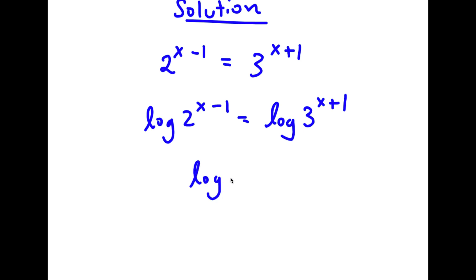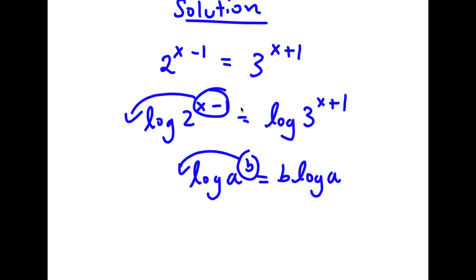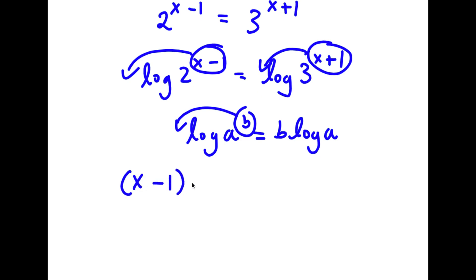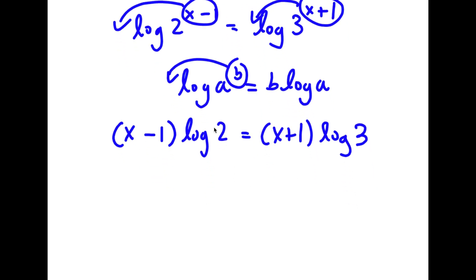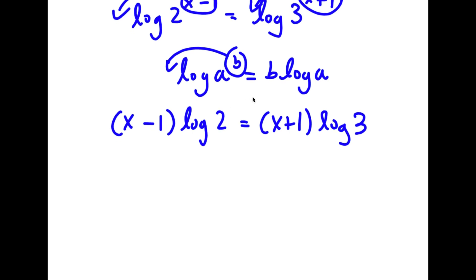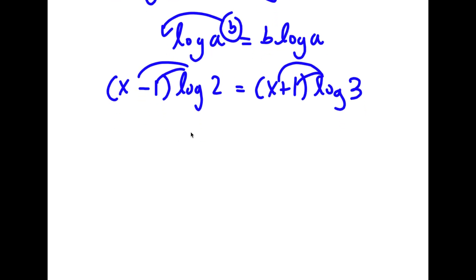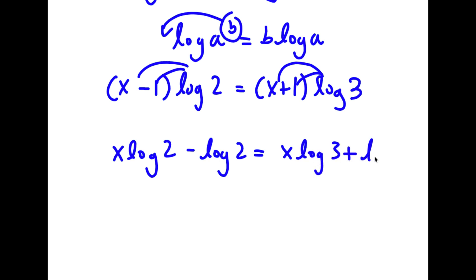If I have something in the form log a to the power of b, I can move the exponent b to the front — this equals b times log a. So log 2 to the power of x minus 1 becomes x minus 1 times log 2, and log 3 to the power of x plus 1 becomes x plus 1 times log 3. Distributing, I have x times log 2 minus log 2 is equal to x times log 3 plus log 3.